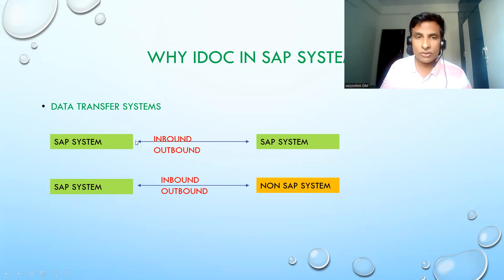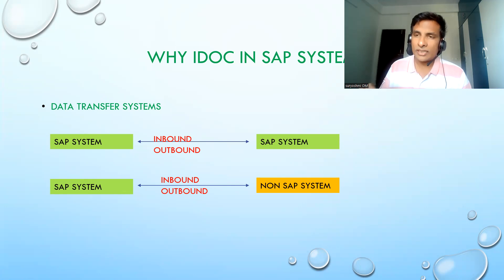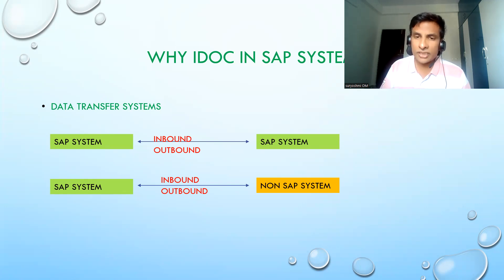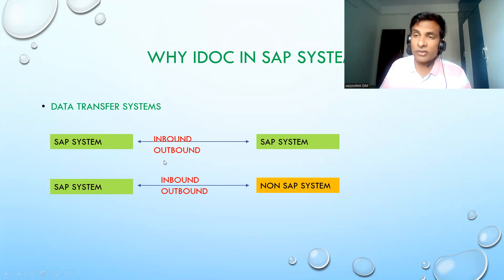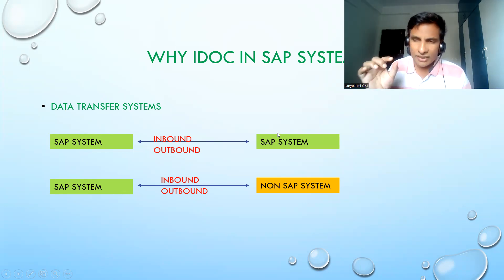For SAP-to-SAP communication you will have inbound, outbound, or sometimes both. For example, you send material basic data from one SAP system, and in the target system you create sales org views, MRP views, sales text, purchase text and other tabs. The material IDOC captures the material information and communicates with the target system to transfer it. This applies similarly to customer, vendor, purchase order, or sales order scenarios.